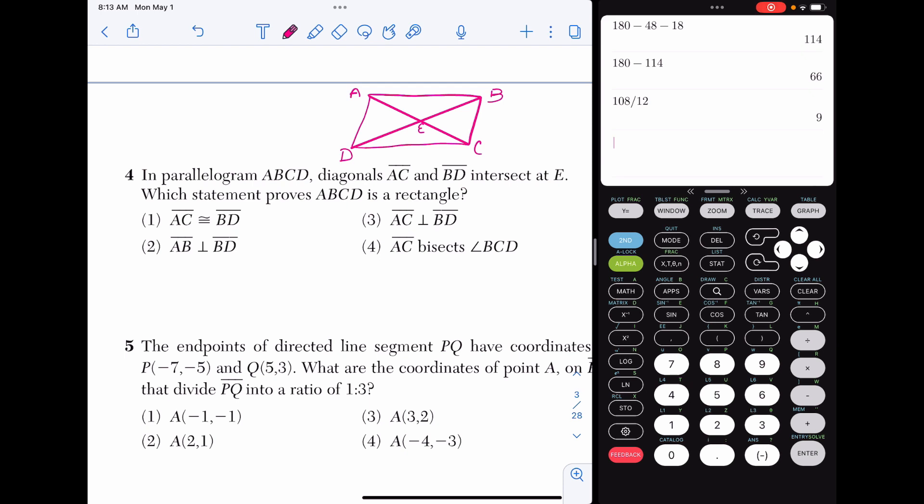Choice one, if AC and BD were congruent, that means the diagonals are congruent. Does this make this a rectangle? Choice two, AB and BD, this is saying that a side and a diagonal are perpendicular. Choice three is saying the diagonals are perpendicular. And choice four is saying that a diagonal is basically bisecting an angle. So if you have memorized your facts about quadrilaterals, which one of these facts is true about a rectangle? That would be choice one. In a rectangle, the diagonals are congruent.